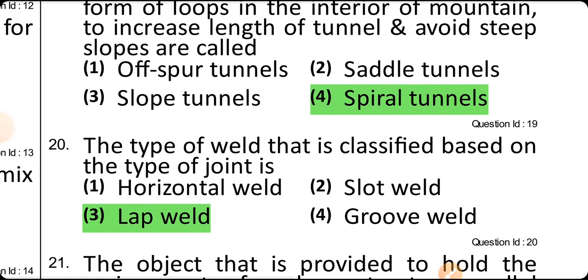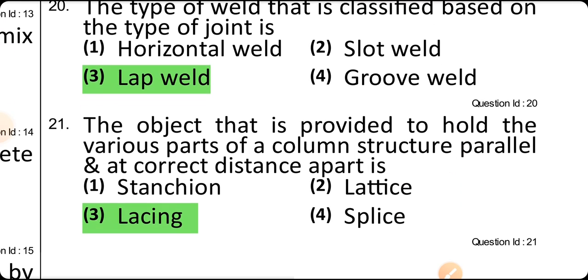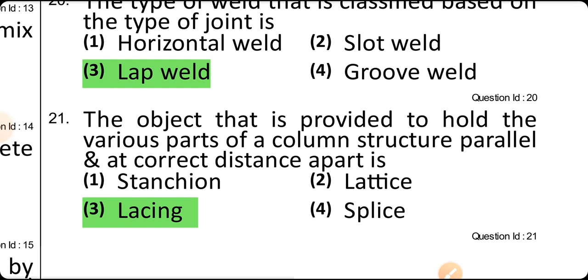The type of weld classified based on the type of joint is a lap joint. The object provided to hold various parts of a column structure parallel at the correct distance apart is called lacing.